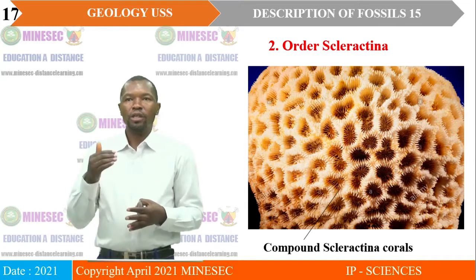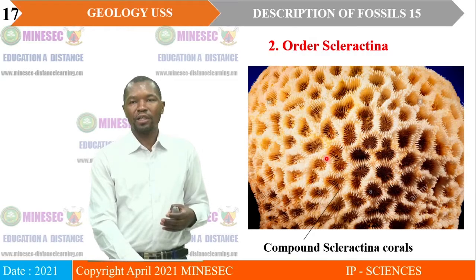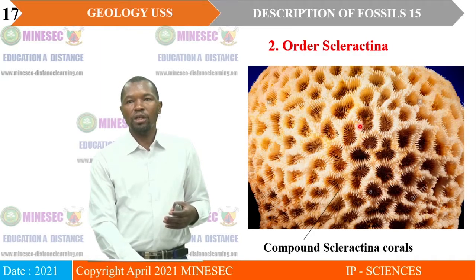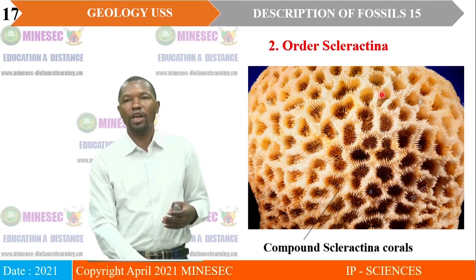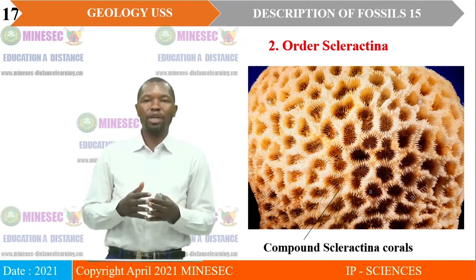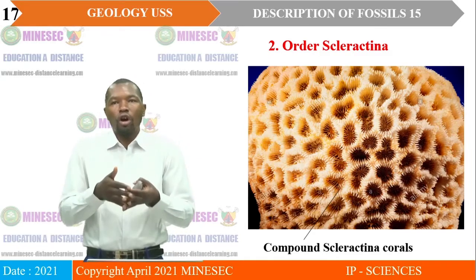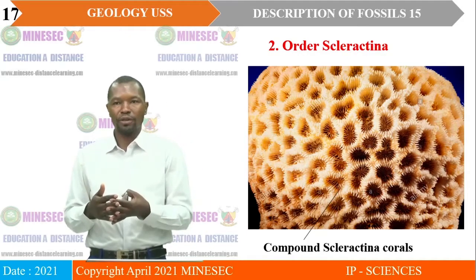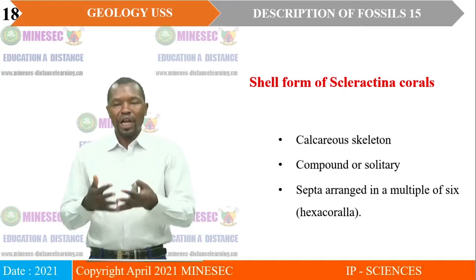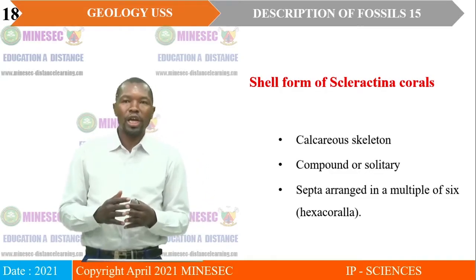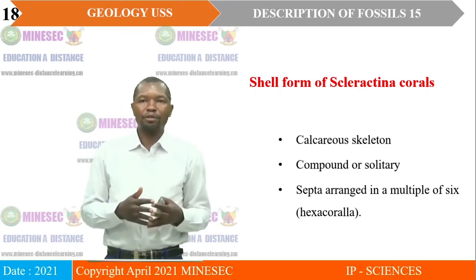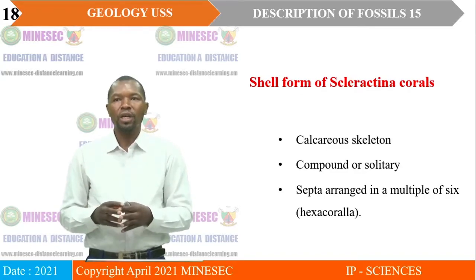Under the order Scleractina, if you look at this photo of the shell form, you realize that the coral contains so many of these coralites. Since they are many, we describe them as compound. So, you can also refer to order Scleractina as compound corals. Now, the shell form of Scleractina corals is calcareous, meaning that they contain calcium carbonate. They are both compound or solitary. And the septa is arranged in a multiple of six.